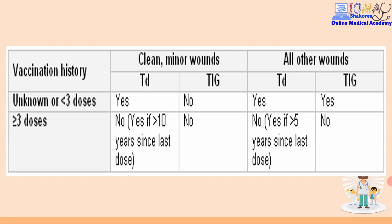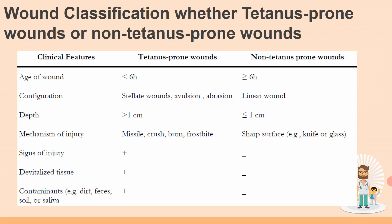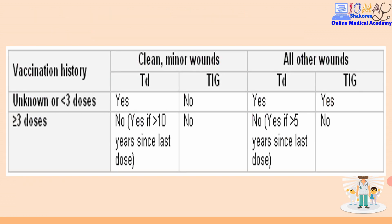The first question you will ask yourself about tetanus is: does the patient have a clean wound or a dirty wound? The first step is to check clean or dirty. The second step is to determine if this is an unknown immunization status or an immunized patient. The third step is to decide whether to give tetanus toxoid or tetanus immunoglobulin. The most common situation in our locality is to receive a patient with a wound contaminated with soil or dirt.